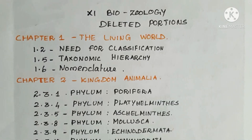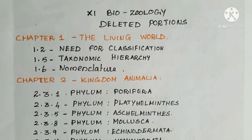Today, we are going to discuss about 11 Biology Deleted Portions. Chapter 1: The Living World — 1.2 Need for Classification, 1.5 Taxonomic Hierarchy, 1.6 Nomenclature.